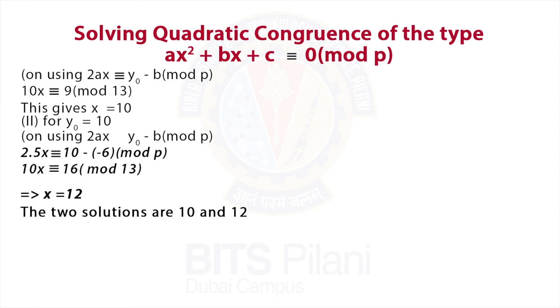So, we have two solutions. One is 10 and the other is 12. It can be easily verified that these two values satisfy the congruence.